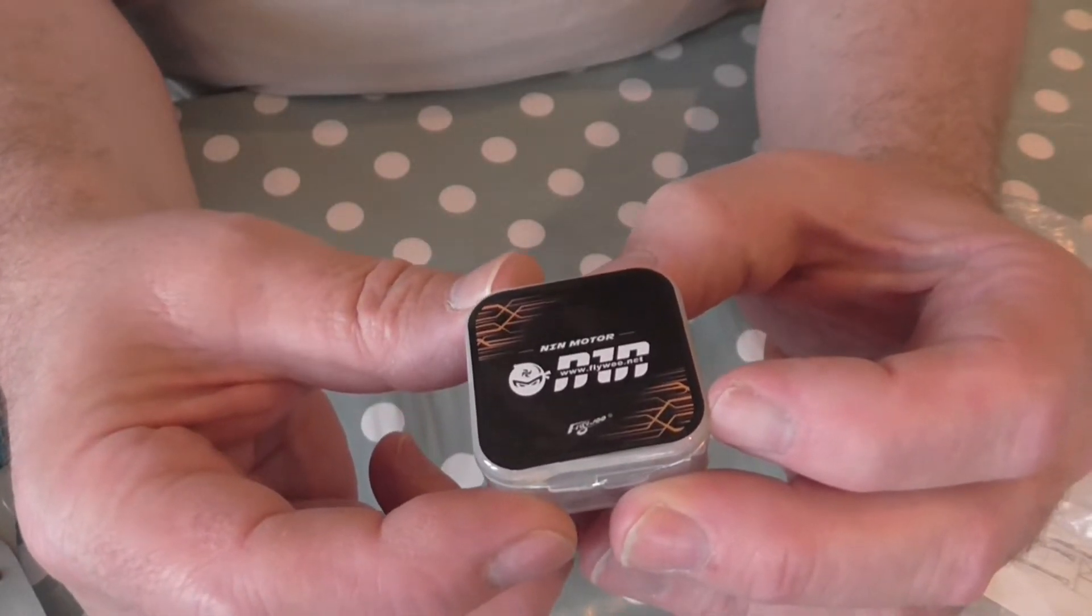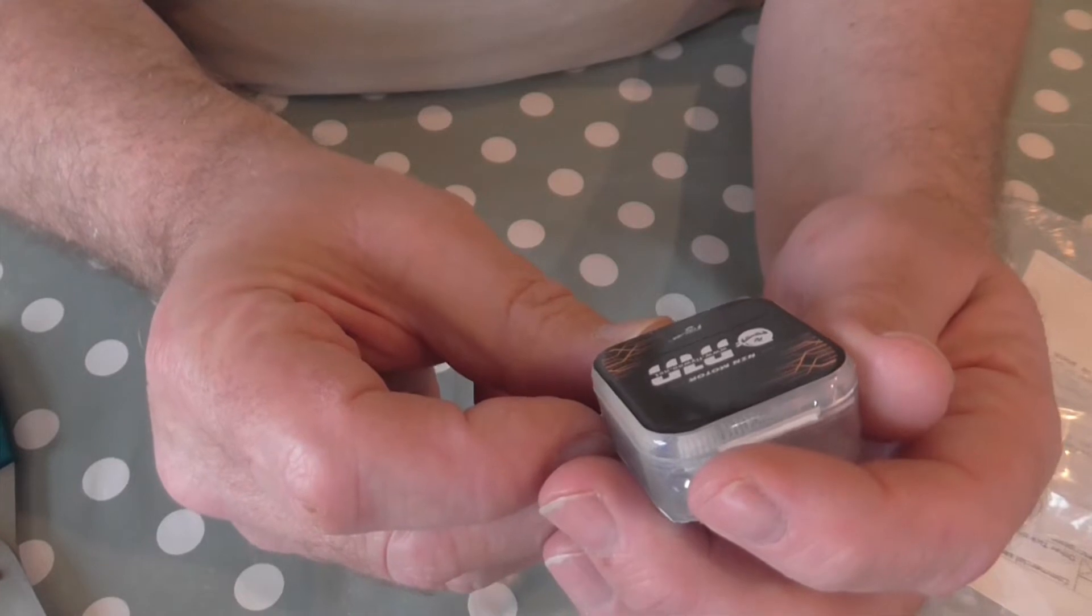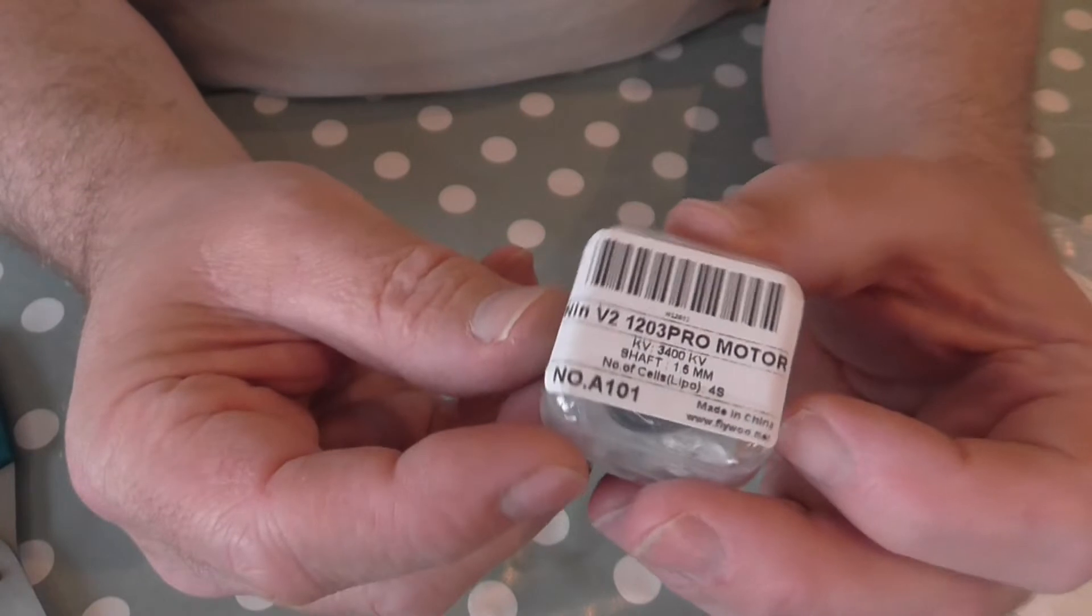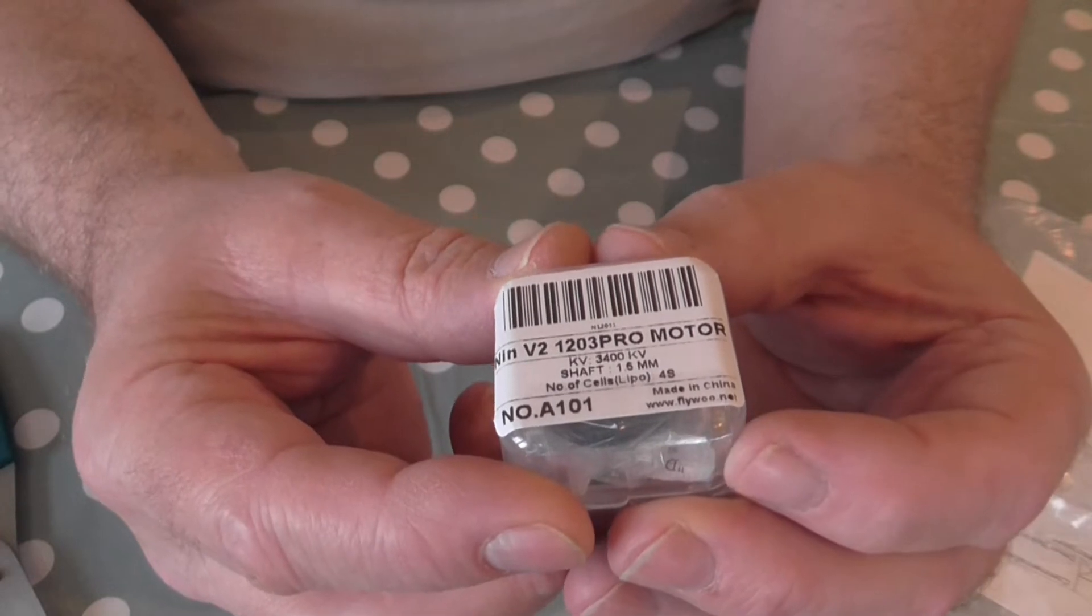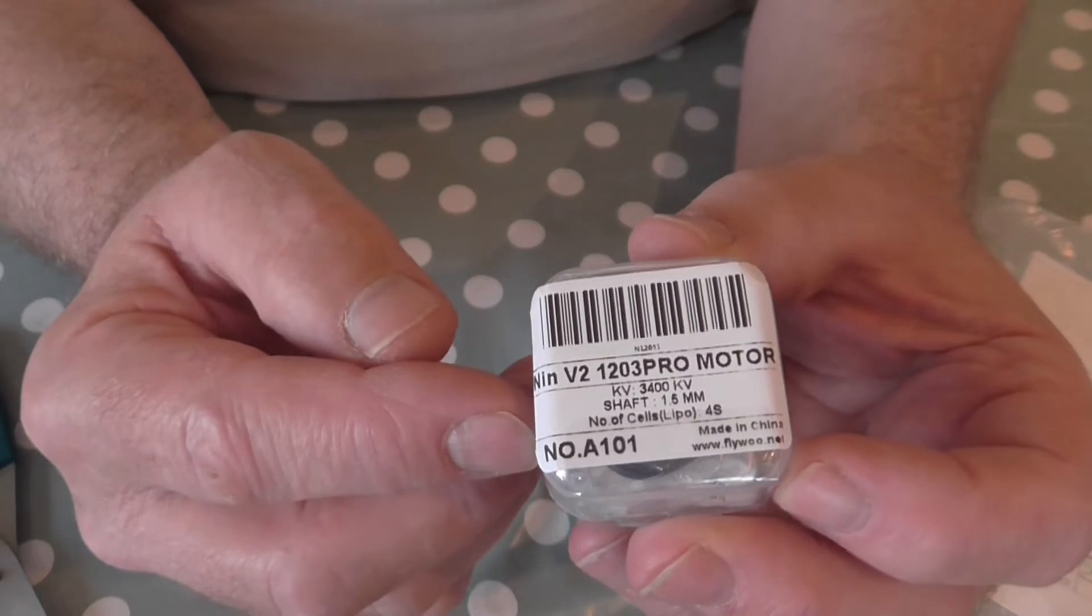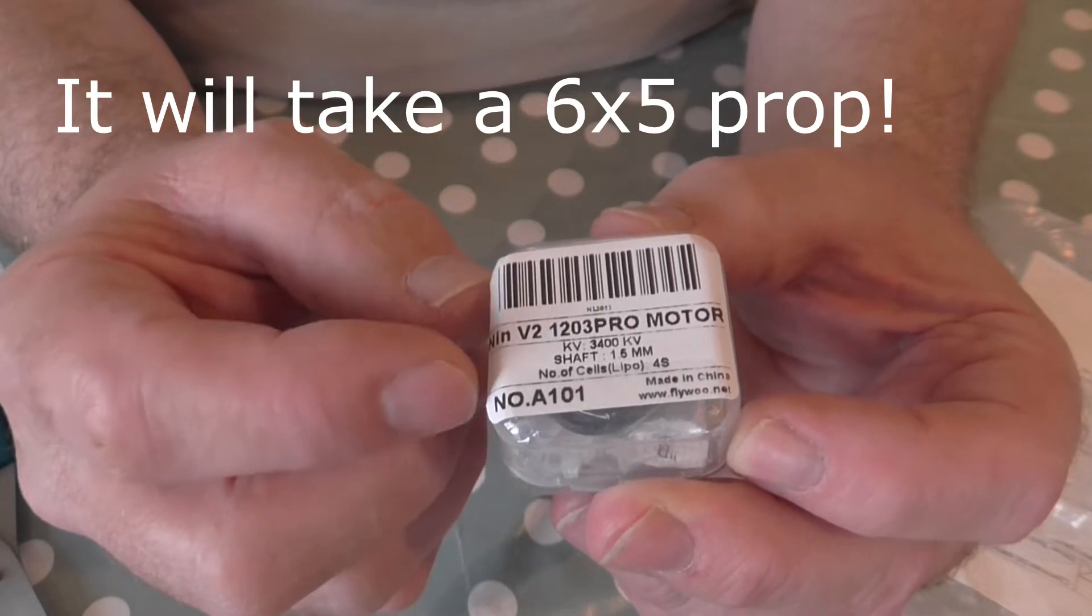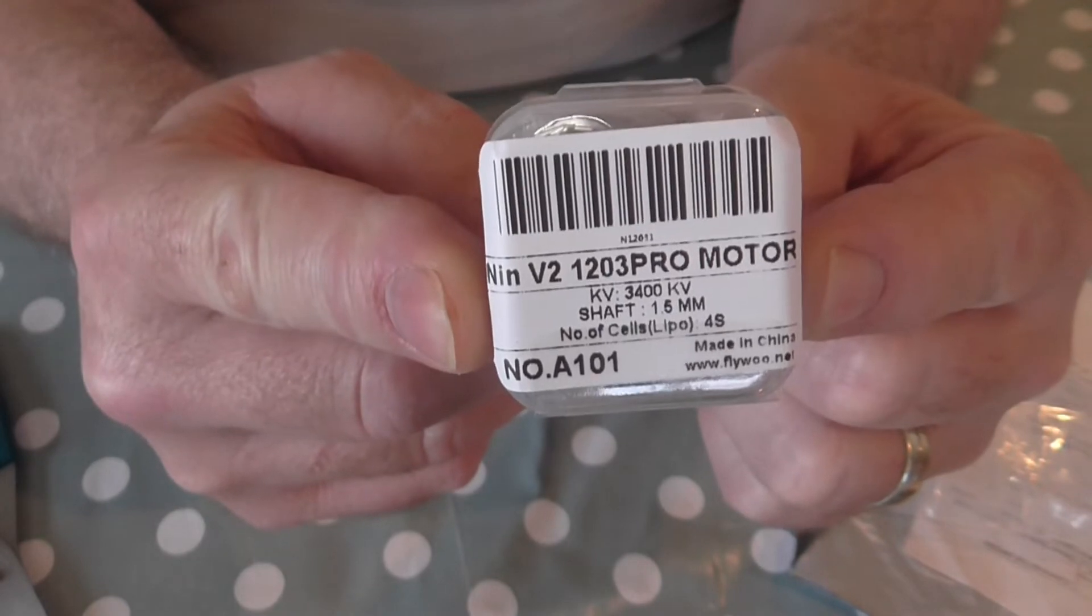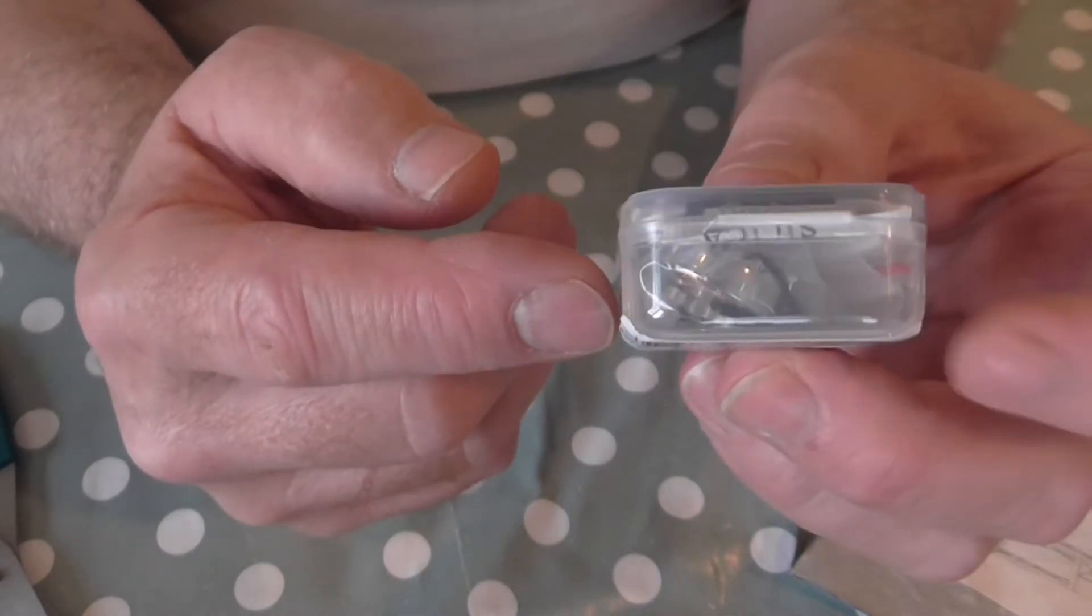NIN motor. Flywoo.net it says. And on the back you see a NIN V2 1203 Pro 3400 KV. So they've sent me the pretty high revving one. So it's going to need a small prop. It's got a 1.5mm shaft on this and it will take a 4S LiPo. So I'll probably actually use this on a plane rather than a drone, being as I've just got the one.